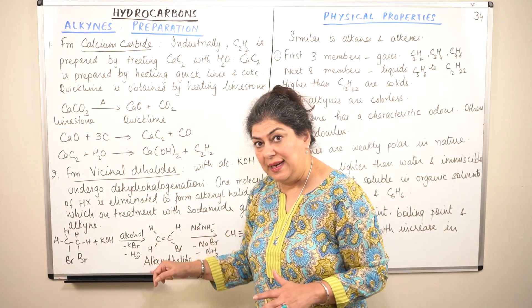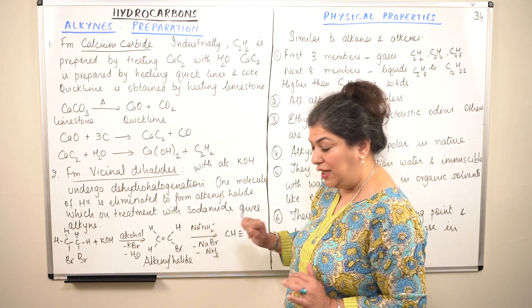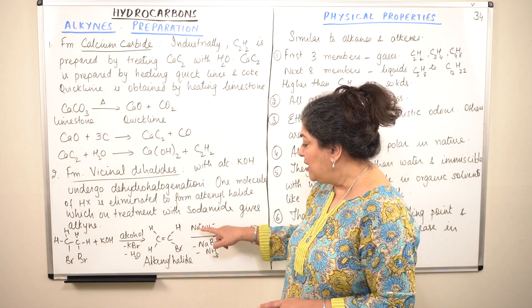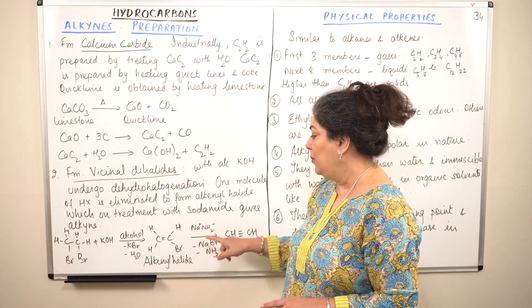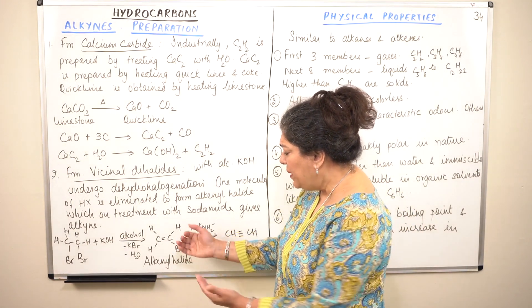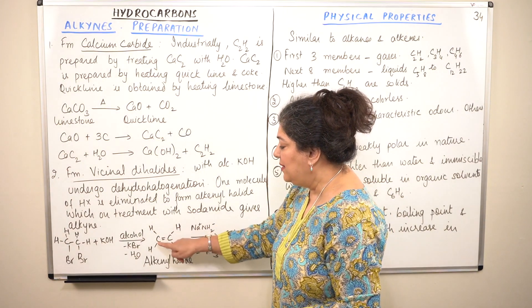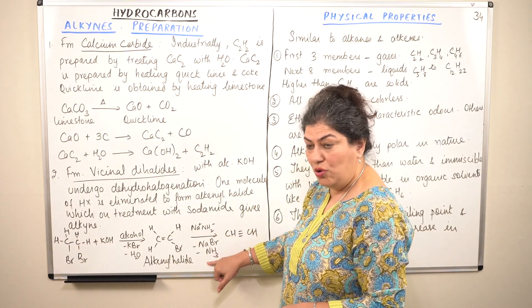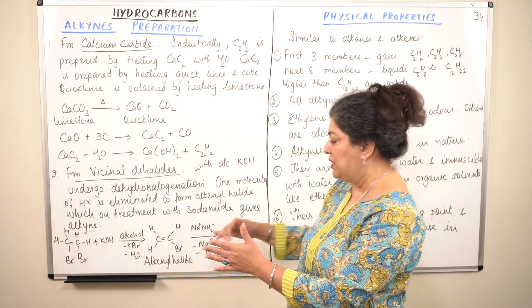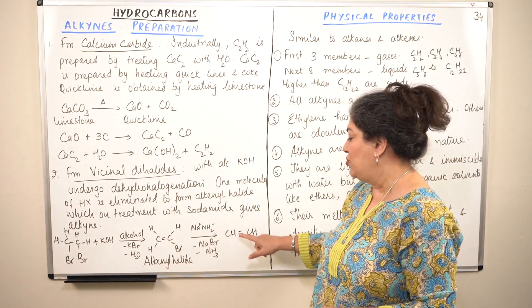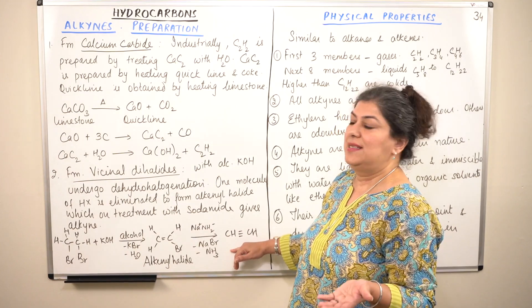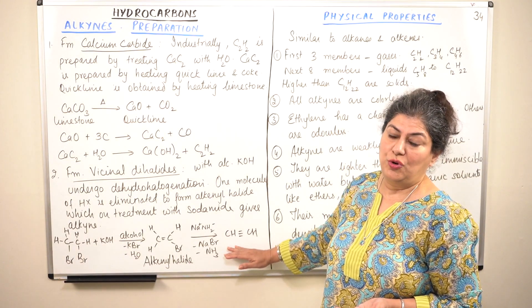In the next step, the alkenyl halide is made to react with sodamide, NaNH₂ (Na⁺ and NH₂⁻). The Na⁺ reacts with bromine to give sodium bromide, and the NH₂⁻ combines with the remaining hydrogen to form NH₃, ammonia. Bromine takes its electron and leaves, the hydrogen leaves to form ammonia, and both carbons share those electrons to result in the formation of a triple bond. As soon as a triple bond forms between the two carbon atoms, it is now an alkyne.